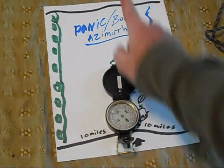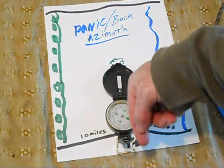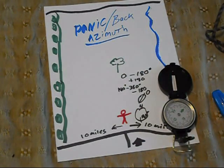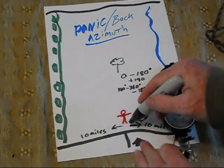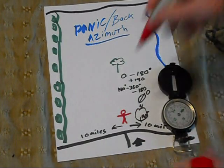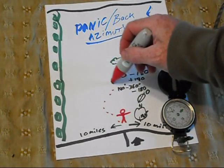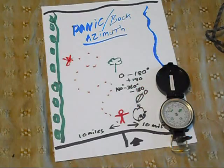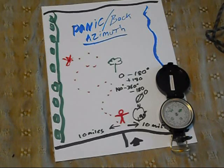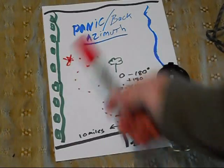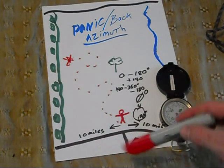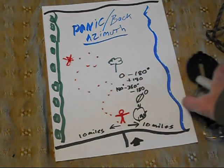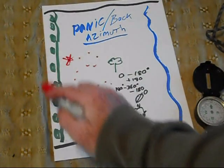If I'm facing zero degrees north and I add 180, it gives me 180 — which is exactly directly behind me. Now, the object behind the back azimuth: if I go walking out here, something happens way over here — I fall down and get disoriented, get knocked out, it's dark and I can't see — something happens where I lose my bearing and I can't figure out which way I'm going. If I remember what my back azimuth was, and I already knew the terrain, I cannot get lost.